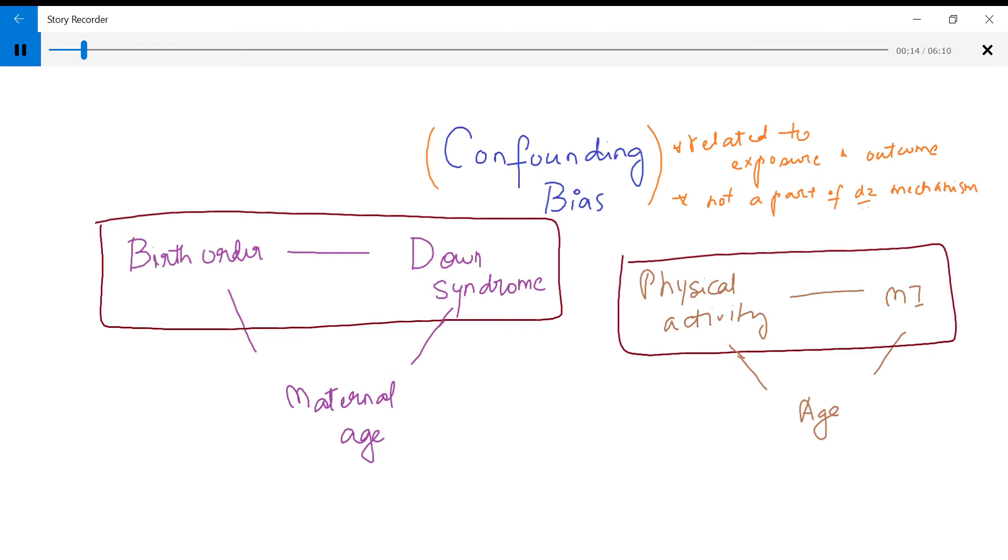So confounding bias is one of the biases that confuse us when we're doing research studies. And this is one of the things that everybody wants to be careful about. Now, I have taken two examples to explain about confounding bias.